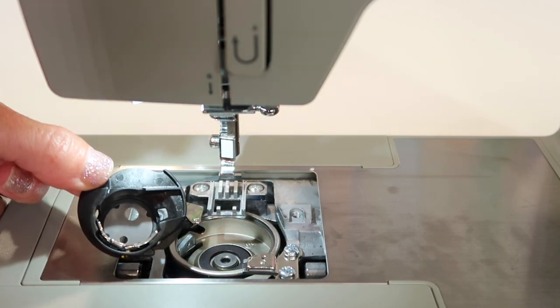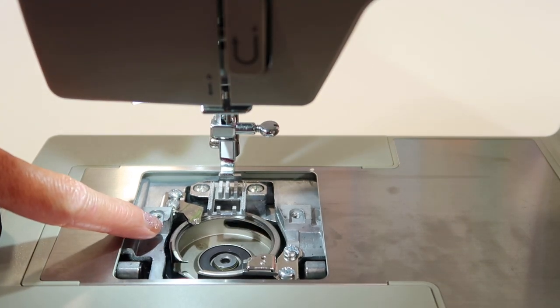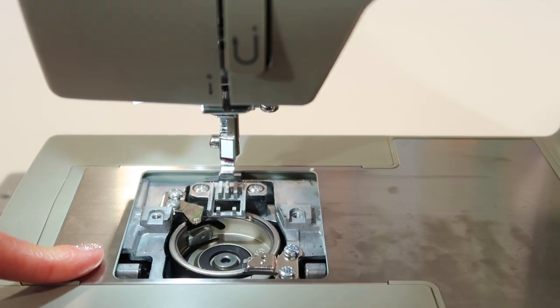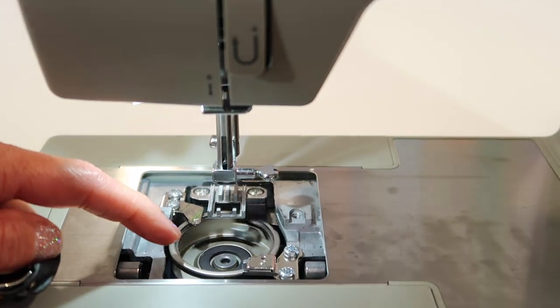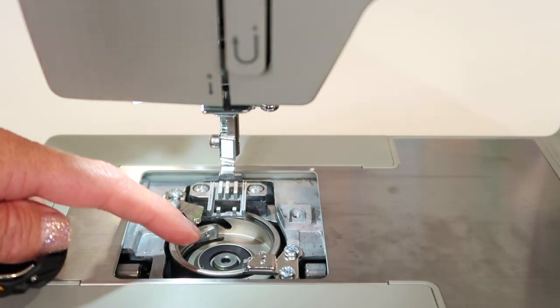This is considered your bobbin case, this is the hook. There is a sharp part right here that comes around and creates your stitch. Every time you take one stitch, this rotates around two times. It's pretty incredible how a sewing machine even works.